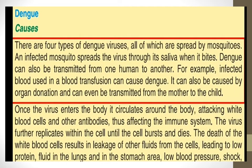Next we will discuss dengue. There are four types of dengue viruses, all of which are spread by mosquitoes. Like malaria, an infected mosquito spreads the virus through its saliva when it bites. Dengue can also be transmitted from one human to another — for example, through infected blood transfusion, organ donation, or from mother to child.